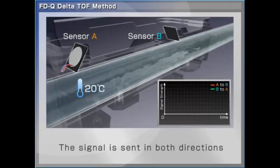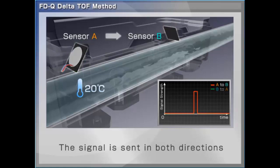With the Delta TOF method, the signal is sent from both directions. When the liquid is not flowing in the pipe, the time it takes for a pulse to travel from A to B is equivalent to the time it takes to travel in the opposite direction, from B to A.